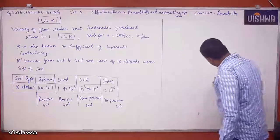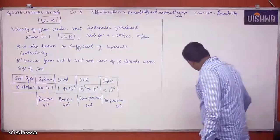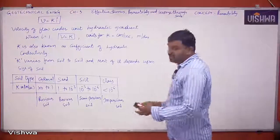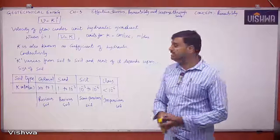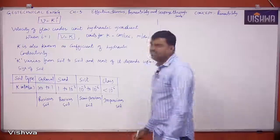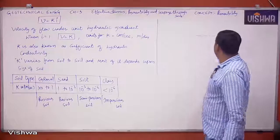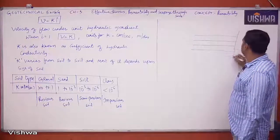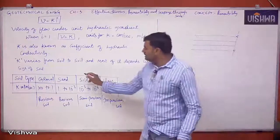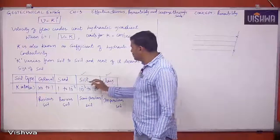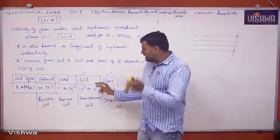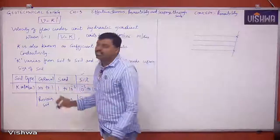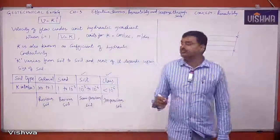Darcy's Law applies under laminar flow conditions — that is, layered flow. In fine-grained soils like silt and clay, laminar flow is possible. In coarse-grained soils like gravel and sand, laminar flow may not always be possible, so Darcy's Law may not apply there.